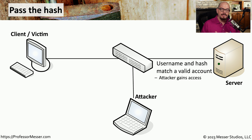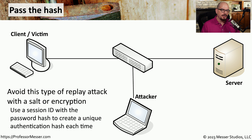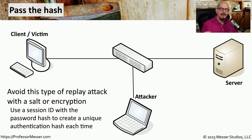The server receives a username and hashed password that properly authenticates, so the attacker now has access to the server posing as the victim computer. One way to stop this replay attack is to use encryption so that none of the traffic sent across the network can be seen. This may also include salting the password so that each authentication uses a different salt and therefore a different hash. The server is configured to not accept the same hash twice in a row, so even if the attacker gains access to the salted hash, they wouldn't be able to use a replay attack to gain access.